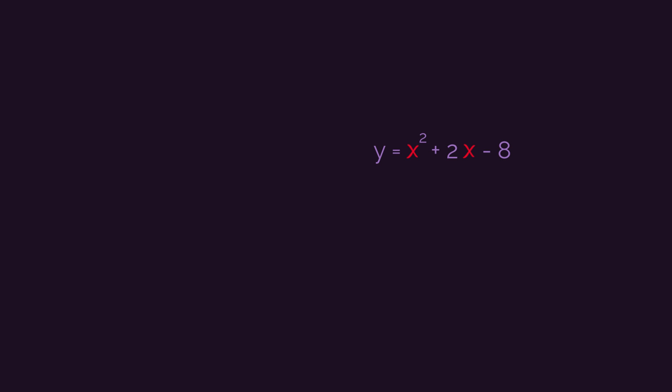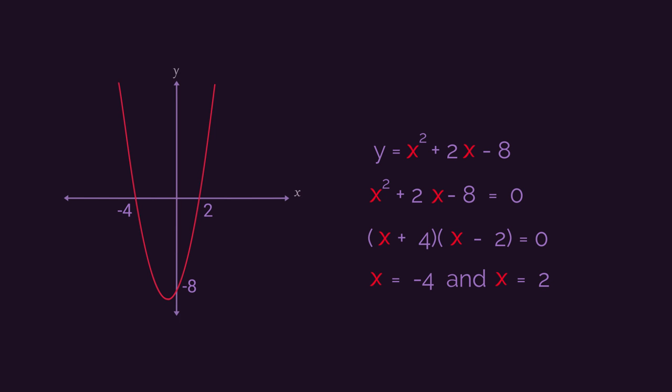So the sketch for y equals x-squared plus 2x minus 8 would look something like this. Because negative 8 in the equation gives us the y-intercept, and factorising the quadratic gives the roots negative 4 and 2.